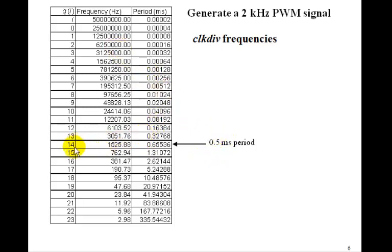Well, we could make a 15-bit counter, but that's more resolution than we need for a motor speed. Eight bits would probably be enough. That would be 255, which would give us 255 different speeds.